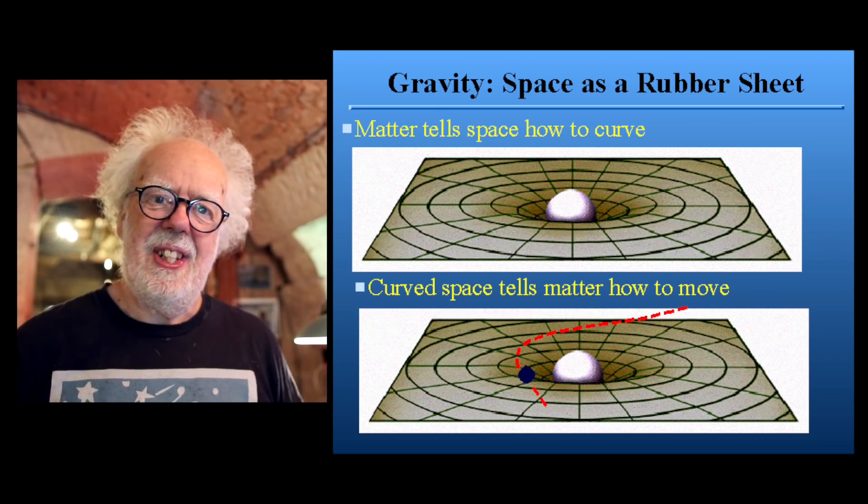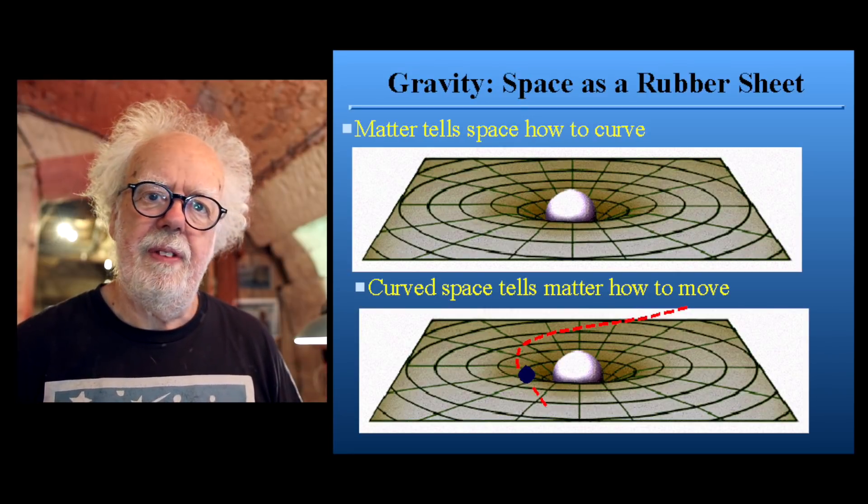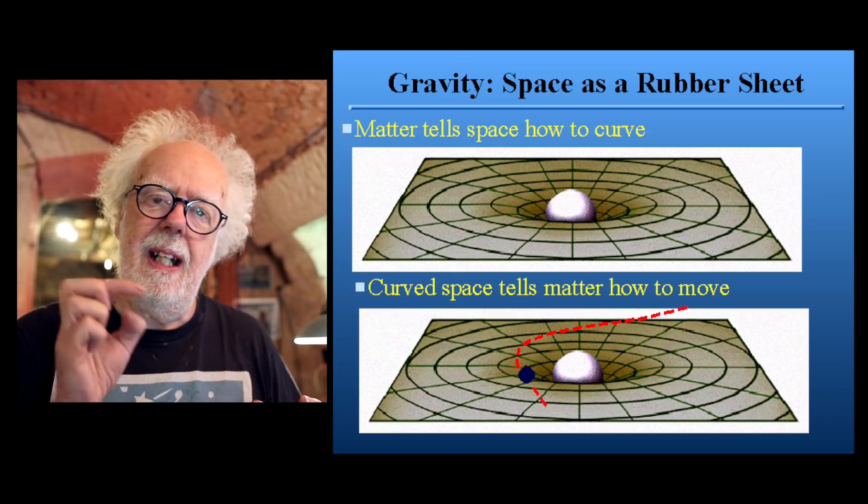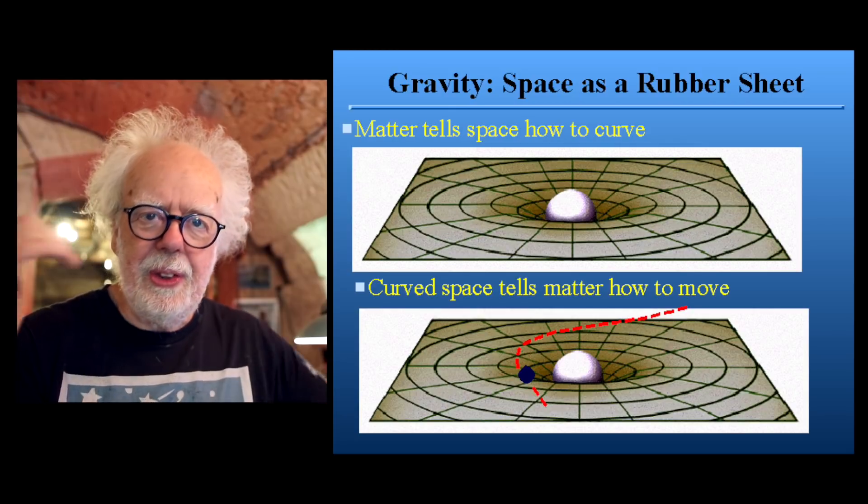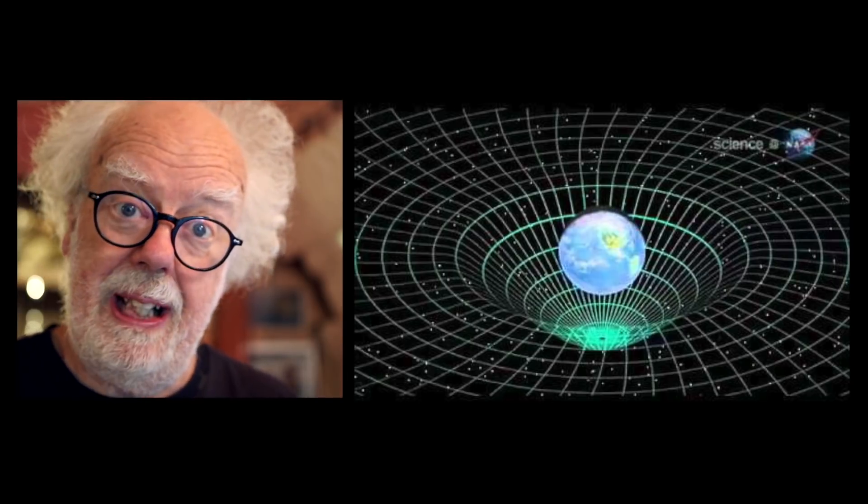And I think the classic rubber mat experiment shows how gravity works. A deep heavy chasm is made by a heavy ball, and another planet orbiting it goes into this indentation. And that's how mass distorts space.